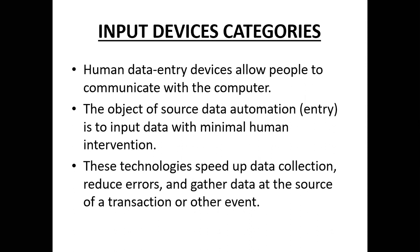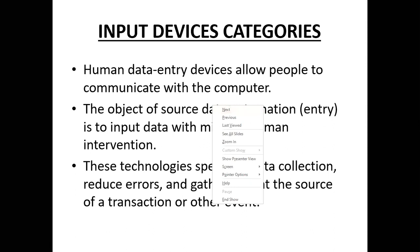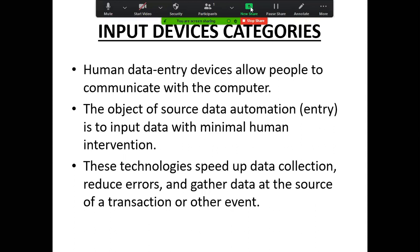A mouse is another example of a human data entry device. On a mouse you have two buttons — the left button and the right button. When issuing instructions, for example to display something, you press the right or left button. Whatever needs to be entered, the human is the one who does it.